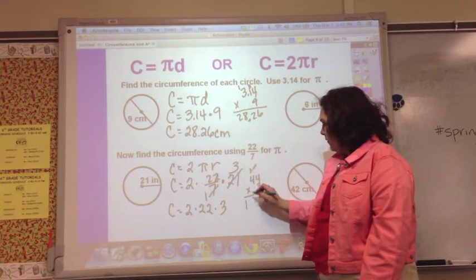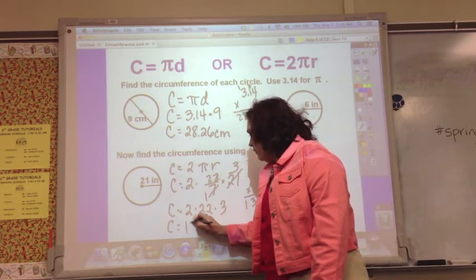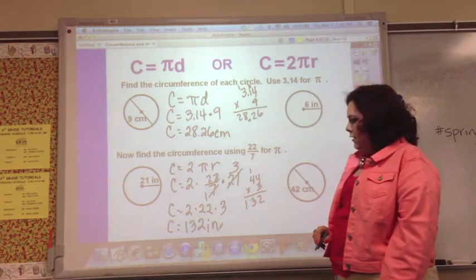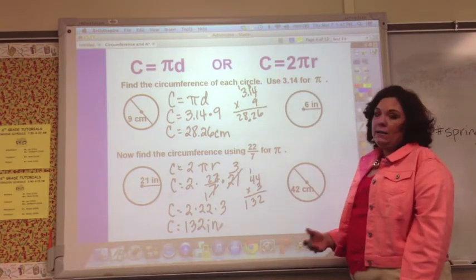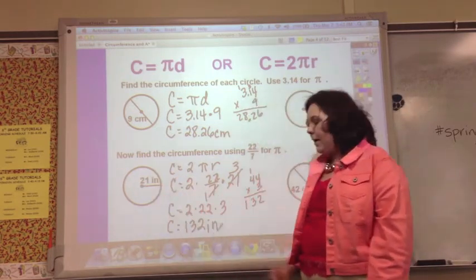So C equals 132 inches. If you estimate, you would say 42 times 3 would be about 132.